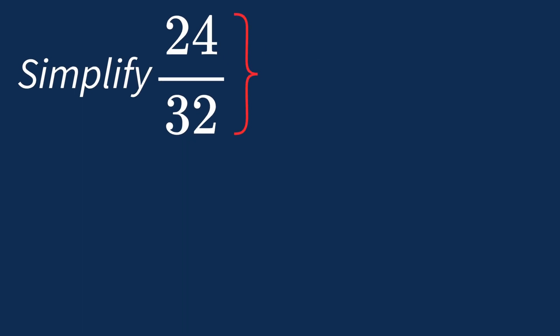To simplify 24 over 32, we need to look for the common factors between the top number, the numerator, and the bottom number, the denominator.